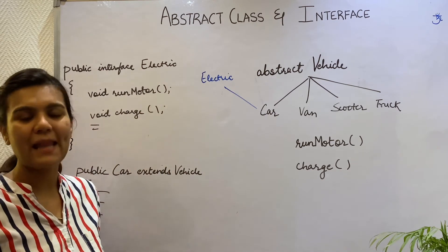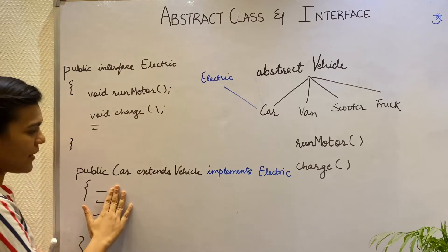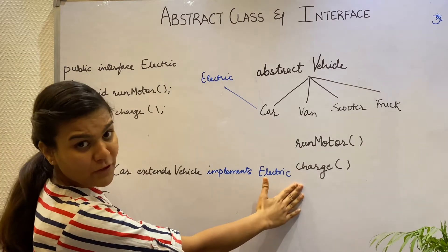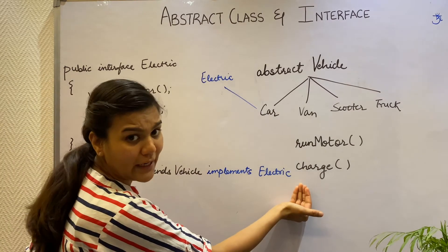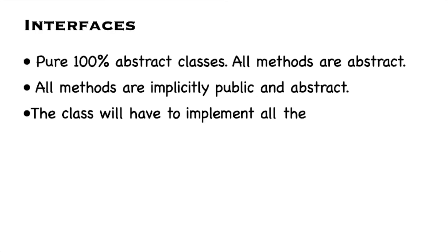They are implicitly public and abstract. So I don't have to explicitly write public and abstract. When a Car class is implementing an interface, that is it implements my Electric interface, it implements all the methods of an interface thereby agreeing for a certain behavior.